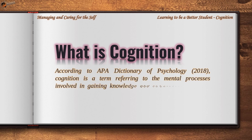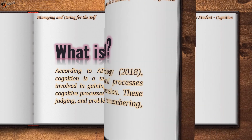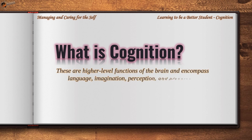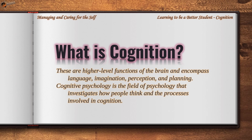These cognitive processes include thinking, knowing, remembering, judging, and problem-solving. These are higher-level functions of the brain and encompass language, imagination, perception, and planning. Cognitive psychology is the field of psychology that investigates how people think and the processes involved in cognition.